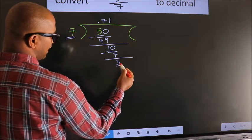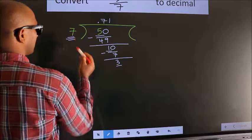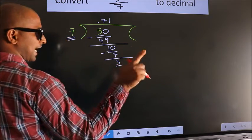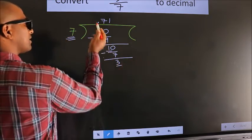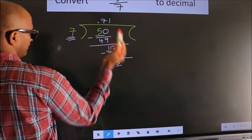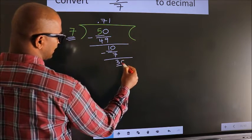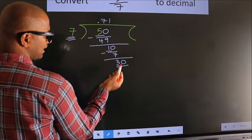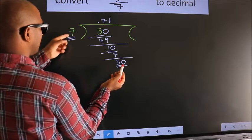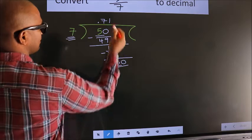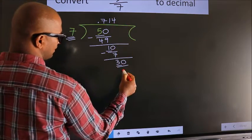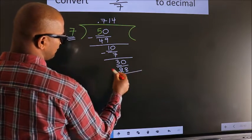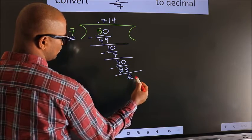Here we have 3, here 7. 3 is smaller than 7. And we already have the decimal, so we can directly take 0. So, 30. A number close to 30 in the 7 times table is 7 fours: 28. Now we subtract. We get 2.